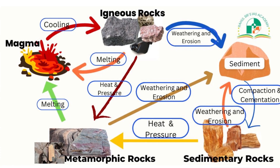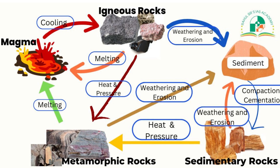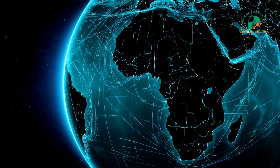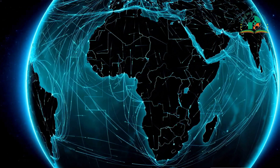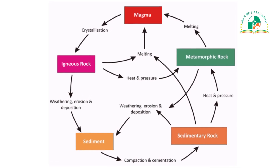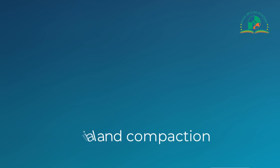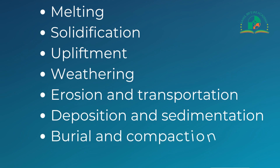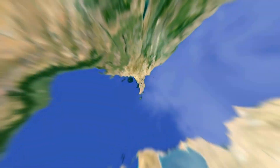With this backdrop in mind, let us discuss the rock cycle and the rock cycle diagram. The rock cycle is the process through which igneous, sedimentary, and metamorphic rocks undergo transformation. One important thing must be kept in mind: rocks undergo transformation in geological time, not human time — that is to say, in thousands and even billions of years. The rock cycle diagram represents all the processes of rock transformation in a single diagram. The processes involved include melting, solidification, upliftment, weathering, erosion and transportation, deposition and sedimentation, burial and compaction, and more.